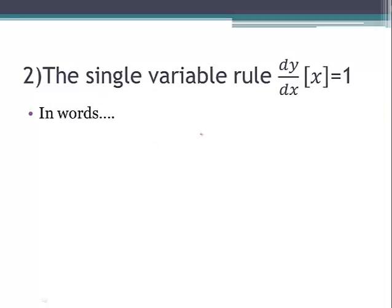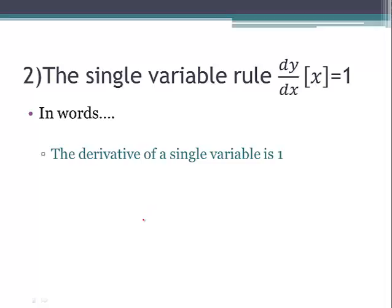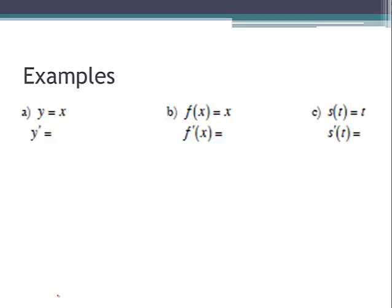Next is the single variable rule. The derivative of y with respect to x of just x is one — the derivative of a single variable is one. Why? Because the line y equals x has a slope of one everywhere. So y equals x has a slope of one, f of x equals x has a slope of one, and s of t equals t also gives a derivative of one, because the variable matches. If the variable didn't match, we would write zero.